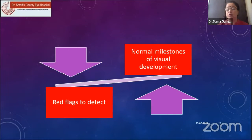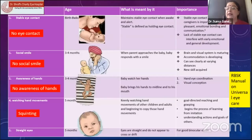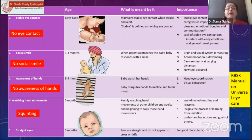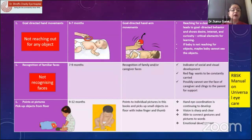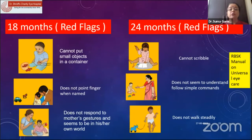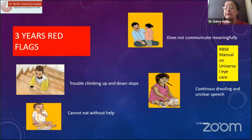So what are the red flags to detect? We need to know the normal milestones. RBSK has provided a manual distributed at all their child development centers across India. We need to make everyone aware that if a child has no eye contact, no social smile, no awareness of hands, or squinting before six months, or is not reaching out to objects, that is a red flag to refer to a pediatric ophthalmologist. Further flags include: not recognizing faces at seven to nine months, not picking up objects from the floor, not pointing at pictures, not responding to gestures, not walking steadily, having trouble climbing stairs, or being unable to eat without help.